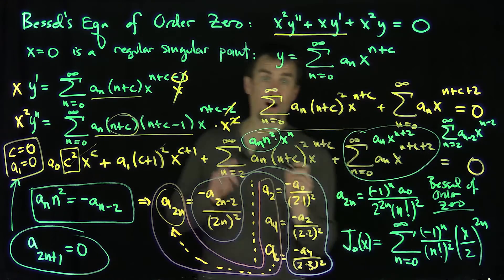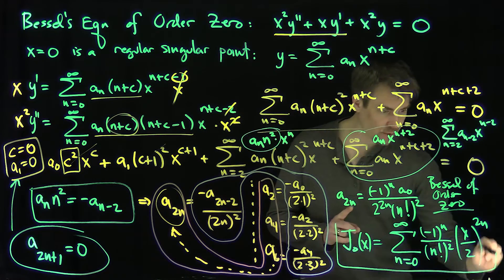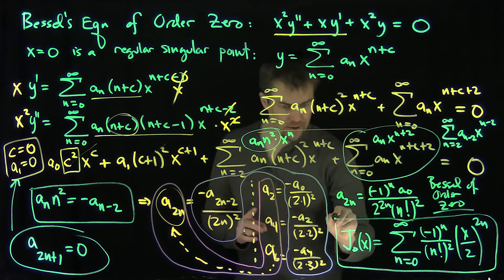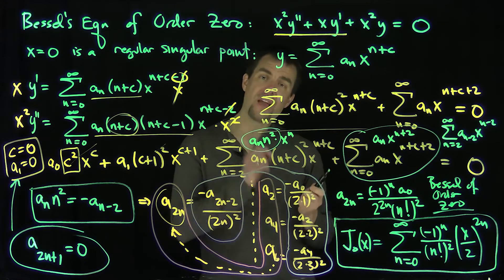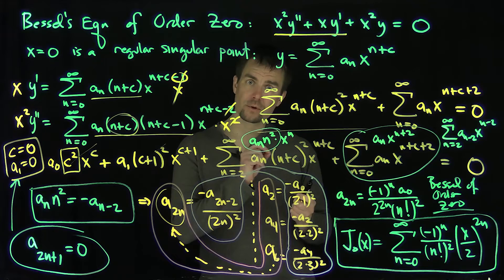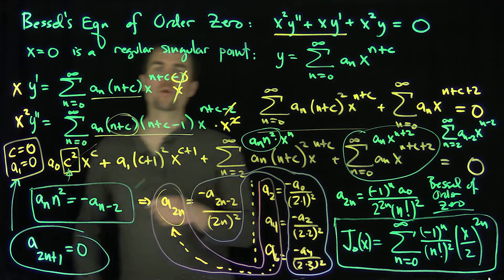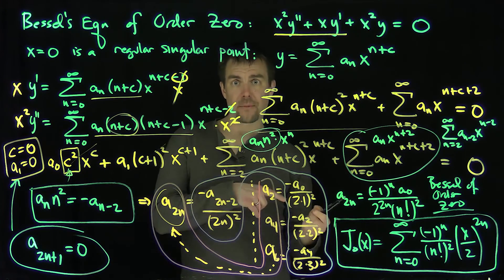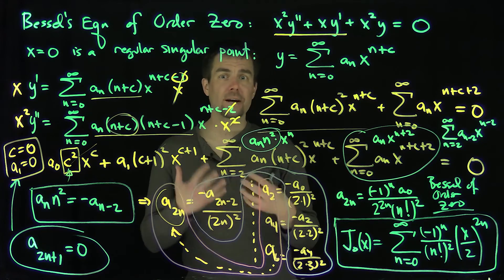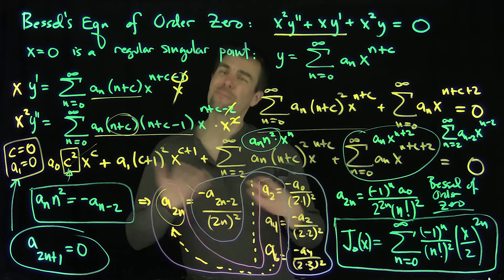This is only one of the two linearly independent solutions to Bessel's equation of order 0. Since the indicial equation has a repeated root, the second linearly independent solution will involve a logarithm. We'll see how to compute that second solution, independent of J_0, in a future video. Thank you very much.